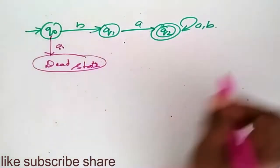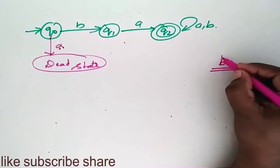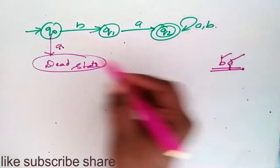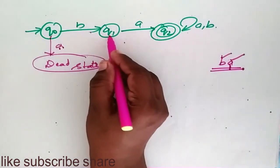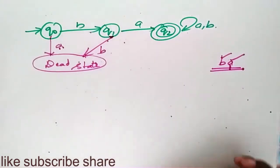In the same way, all my strings should start with BA. So the first alphabet should be B and the second alphabet should be A. This should not be B. So here, it should not accept B. If it accepts B, it should move to the dead state.